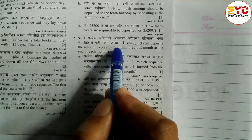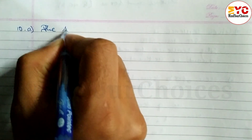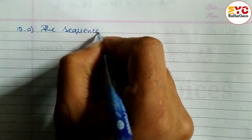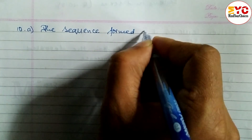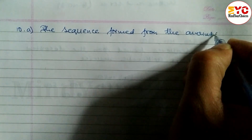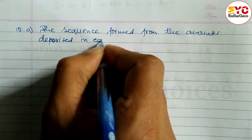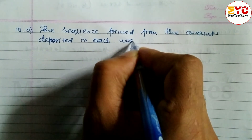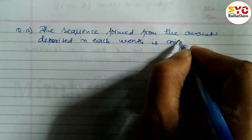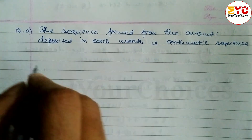The difference is equal, so it is definitely arithmetic. The sequence formed from the amounts deposited in each month is an arithmetic sequence.